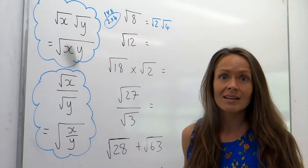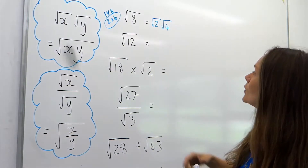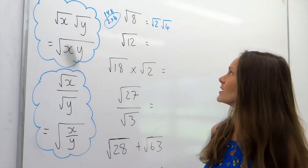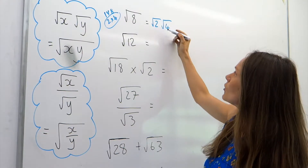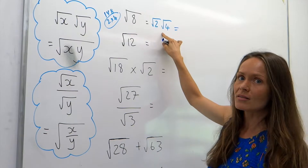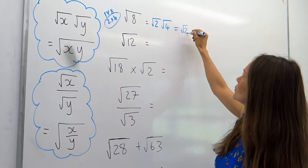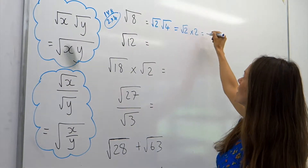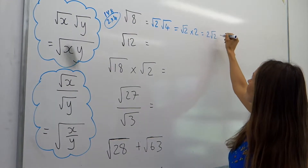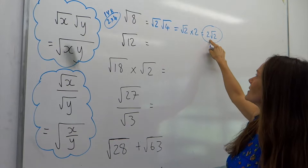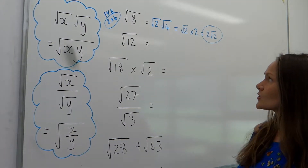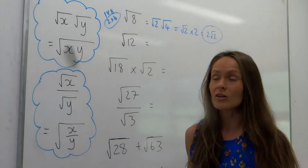Because 4 is a square number we can calculate it - the square root of 4 is 2. Remember we're multiplying these together, so root 2 multiplied by 2 is just the same as writing 2 root 2. This is just a nice tidy way of writing our final answer.